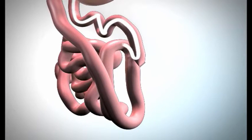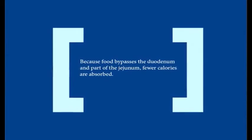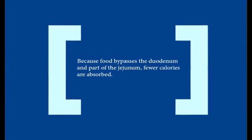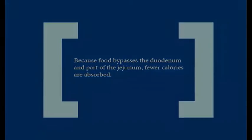Your duodenum and a small part of your jejunum are now bypassed and will not come into contact with any food. Because food bypasses the duodenum and part of the jejunum, fewer calories are absorbed.